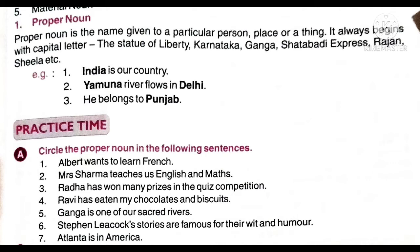A practice exercise is given. You have to do it in your notebook. Circle the proper noun in the following sentences. First: Albert wants to learn French. Albert is the name of a person — yeh humara proper noun hai. French is the name of a language — toh yeh bhi humara proper noun hai.